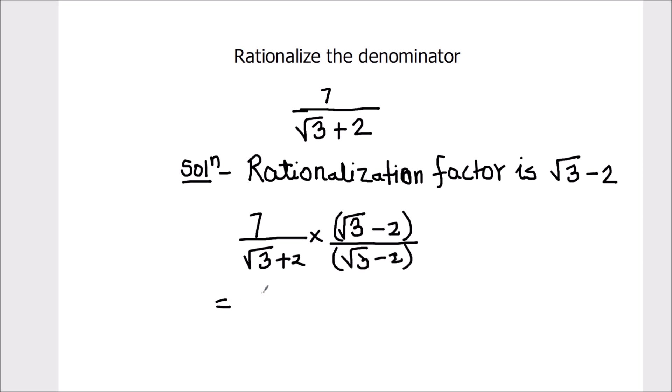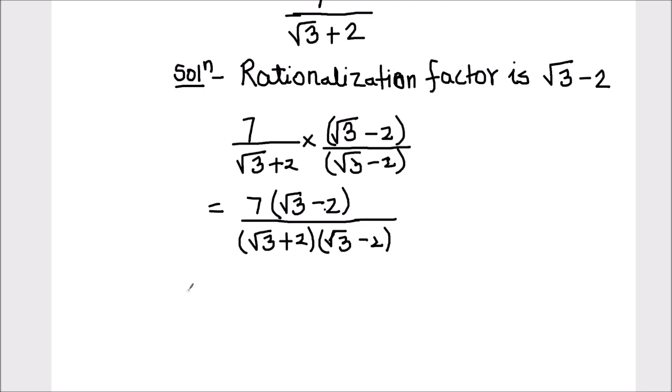This is going to be 7 times root 3 minus 2 divided by, let's multiply the two terms. Here we can make use of the identity: A plus B times A minus B, which equals A square minus B square.